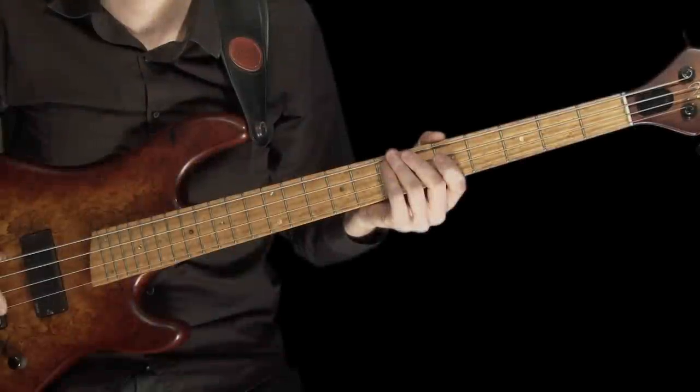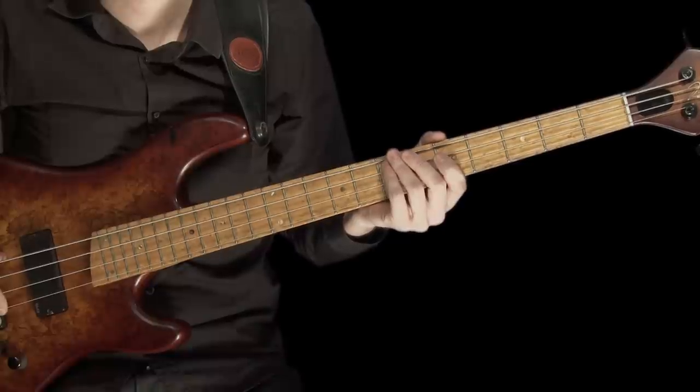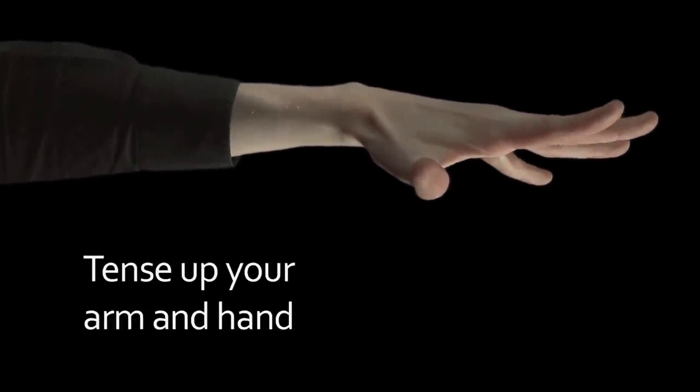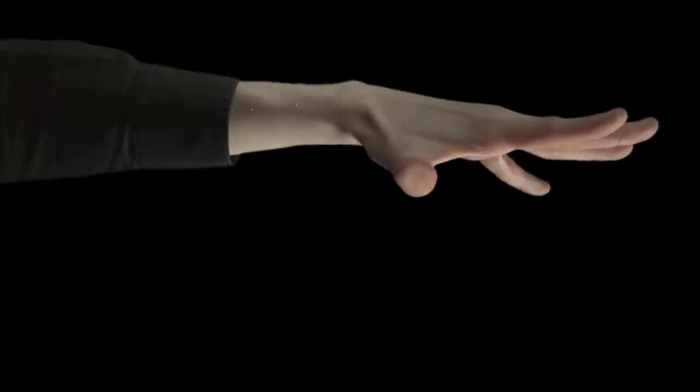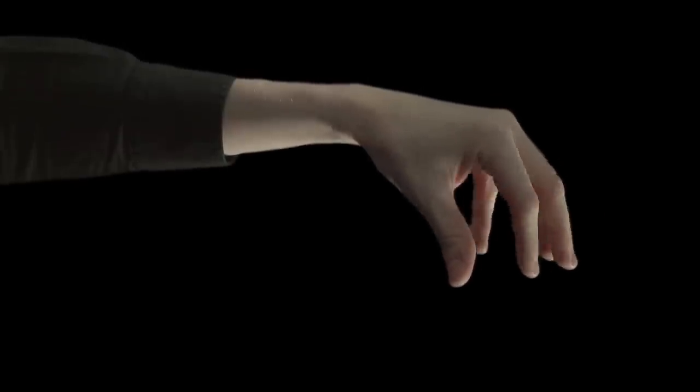Similar to how we looked at the plucking hand, I also want to start by asking you to fully extend your fretting hand out in front of you at shoulder height. Again, tense up your arm and hand like this, really reaching out and spreading the fingers. Okay, now fully relax your arm and hand and allow your fingers and thumb to drop naturally. Really focus on how this feels, and in particular, how easy it is to move your fingers when the hand is nice and relaxed. Go on, take a moment and just wiggle your fingers.